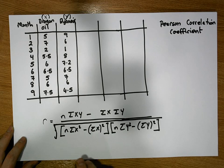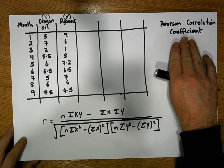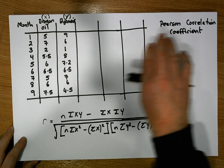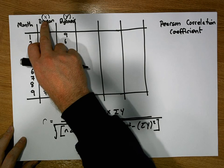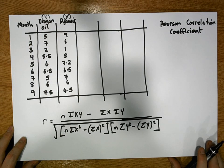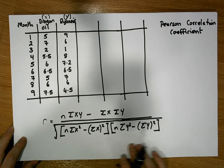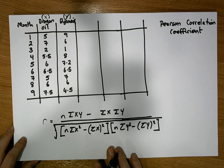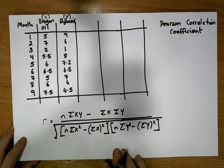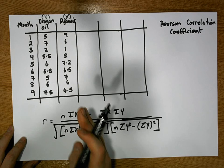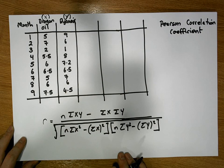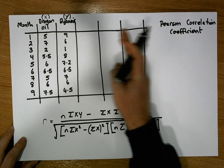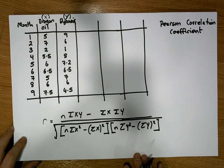For this video we're interested in calculating a numerical measure of the magnitude of association between Dragon Isle and Ryanair share prices. This formula looks complicated, and there are many different versions, but this one is probably the easiest to use and requires fewer calculations when constructing our table.